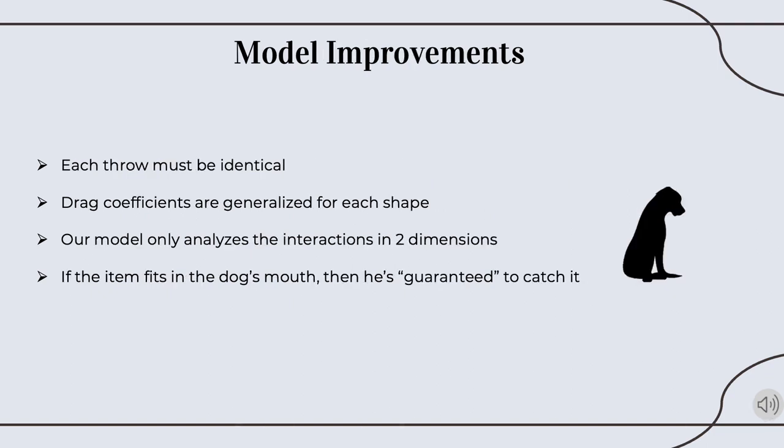Our model could be improved by, one, adding ways to make the throws have some variability in them. Two, we could also improve our model by experimentally determining drag coefficients for actual food items that could be thrown to Fritz. Three, our model could be expanded into three dimensions. And finally, our assumption that if the food item fits in Fritz's mouth at a particular moment in its rotation, then Fritz is guaranteed to catch it could be revised. This revision could include a deeper look at the mechanics of the catch, allowing us to more accurately provide recommendations to improve the catch-throw interaction.